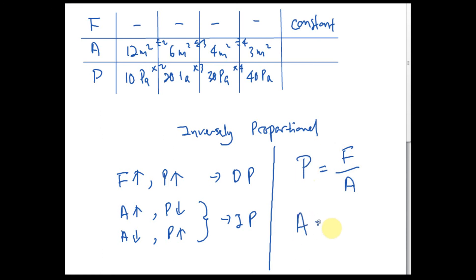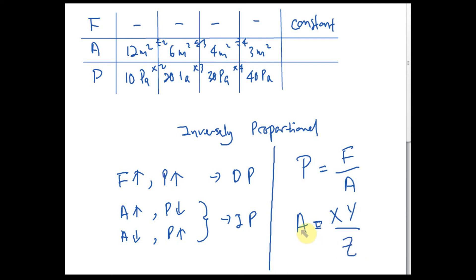For example, A = xy/z. Is A directly or inversely proportional to x? Faisal says directly proportional — that's correct, because x is in the numerator. A and y are also directly proportional because y is in the numerator. But A and z are inversely proportional because z is in the denominator. So when x increases, A increases; when y increases, A increases — both directly proportional. But when z increases, A decreases — inversely proportional. When z decreases, A increases.